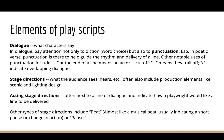The second element is called stage directions — this is what the audience sees, hears, and experiences. It often includes production elements like scenic and lighting design. A subsection of this is what are called acting stage directions, which are oftentimes next to a line of dialogue and indicate how a playwright would like a line to be delivered. You might also see stage directions like beat — think of this almost like a musical beat, a short pause or change in action — or pause or silence. These are ways a playwright uses stage directions to create space within the script for things to happen.